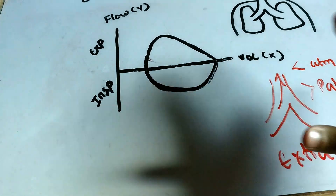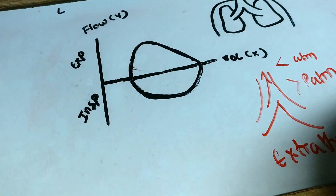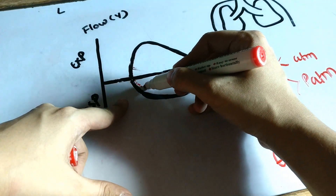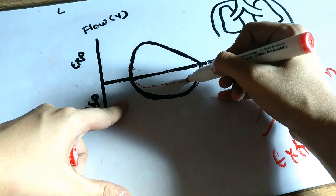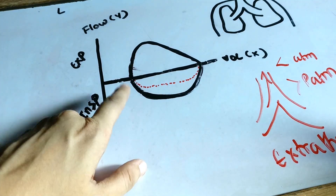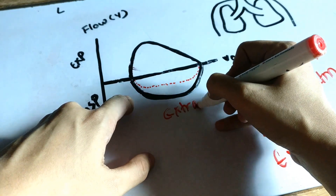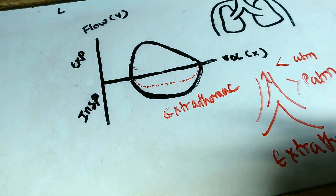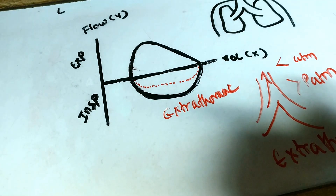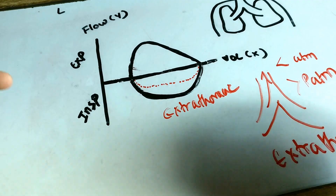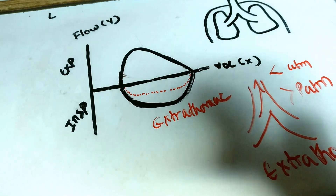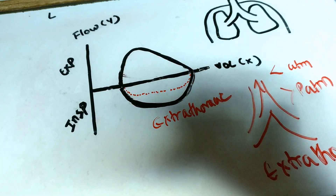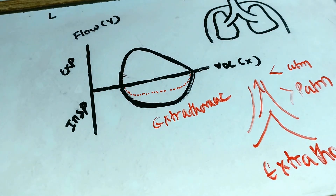On the flow volume loop, expiration is fine with no problem, but there is a flattening of the inspiratory part of the flow volume loop. This is what it looks like in extrathoracic compression, and it is known as variable extrathoracic obstruction — because the atmospheric pressure is increased compared to the airway pressure during inspiration.